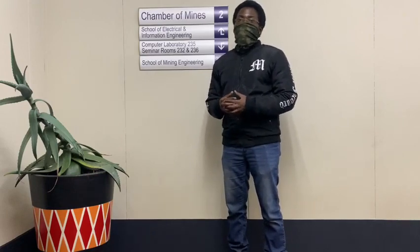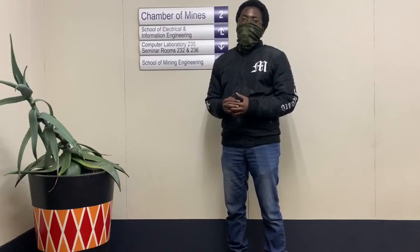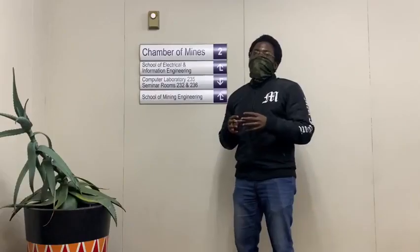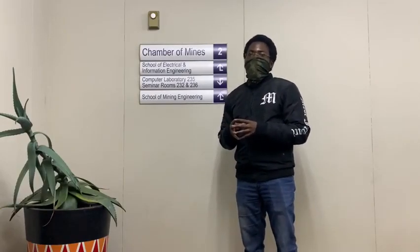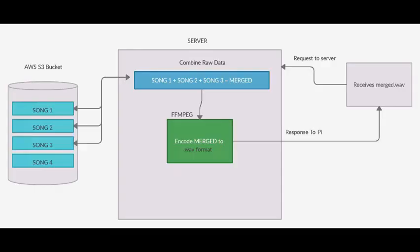For integration with the hardware team, our web app has an API which the Raspberry Pi can use to request and download files. The request is sent to the app via the Raspberry Pi. The server will pull files from S3 storage up to a certain size, combine them into one file, encode them into a web format, and then send them to the Raspberry Pi where they will be downloaded and transmitted.